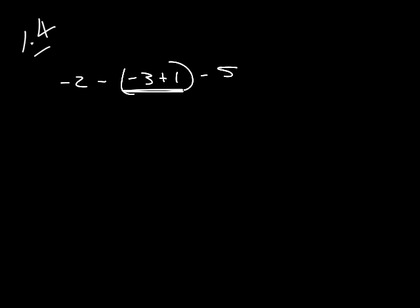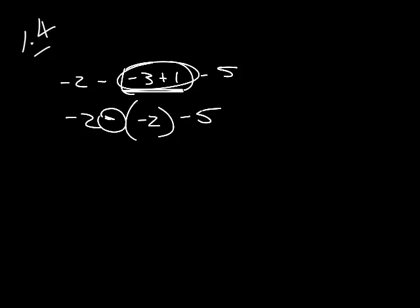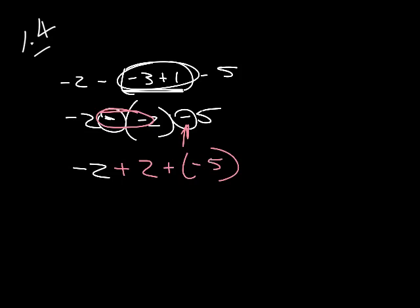We're going to do what's in the parentheses first. Negative 3 plus 1 — we take the difference between the two since the signs are different, and put the sign of the largest number on there. Now we're going to change those to plus numbers. Because these signs are both minus and right next to each other, we change that to positive — two negatives make a positive. And we're going to change this to plus negative 5. Go from left to right; signs are different, so we take the difference between 2 and 2, which is 0. And we have negative 5, so 0 plus negative 5 is negative 5.